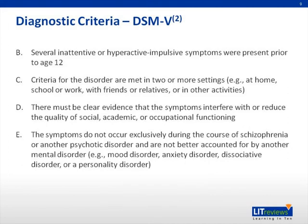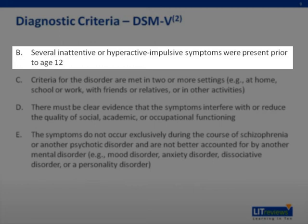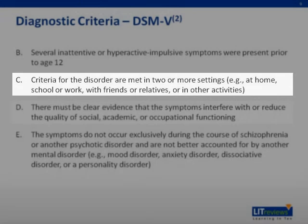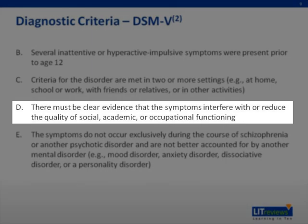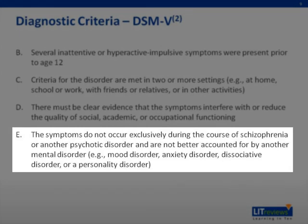In addition, the DSM-5 also specifies that there must be several inattentive or hyperactivity-impulsive symptoms that were present before the age of 12. Criteria for the disorder must be met in two or more settings — at home, in school or work, with friends or relatives, or in other activities. There must also be clear evidence that the symptoms interfere with or reduce the quality of social, academic, or occupational functioning. The symptoms do not occur exclusively during the course of schizophrenia or any other psychotic disorder and are not better accounted for by another mental disorder, such as mood disorder, anxiety disorder, dissociative disorder, or another personality disorder.